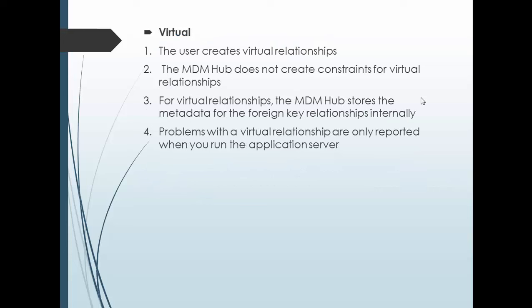For virtual relationships: the user creates the virtual relationship and the MDM hub does not create a database constraint for it. Virtual relationships are those we create manually on custom columns. For virtual relationships, the MDM hub stores the metadata for the foreign key relationship internally. Problems with virtual relationships are only reported when you run the application server. So for enforced relationships you get a database error, while for virtual relationships the error is reported at application server runtime.